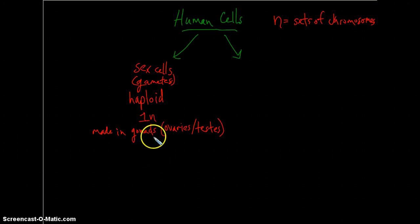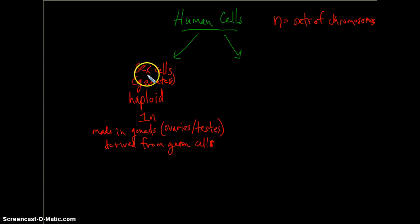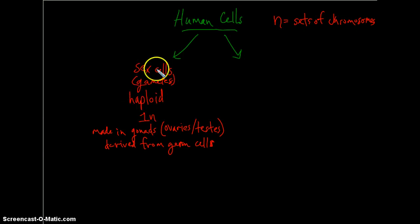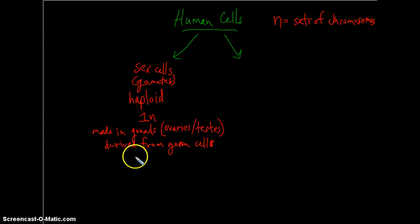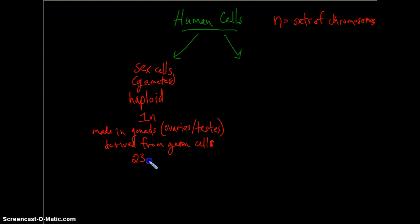They are derived from germ cells. These specific cells go through a couple rounds of cell division through meiosis and create these haploid, or 1N, gametes. In humans, that means the gametes will have 23 chromosomes.